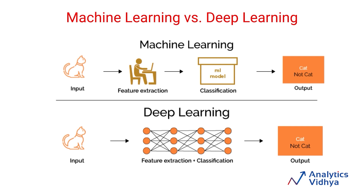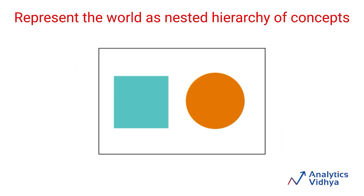The next logical question is: how does the model build these features? Let us understand that through an example. Say you want to differentiate between different shapes and detect squares from a set of them. A deep learning algorithm essentially breaks a complex concept into a hierarchy of simpler concepts. In this case, the complex concept is identifying a square, and we break it down into simpler concepts or representations.